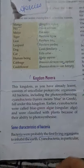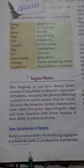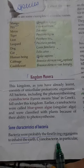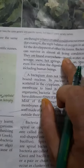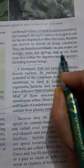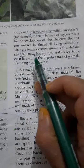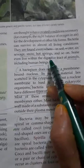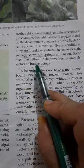What are the characteristics of bacteria? Bacteria were probably the first living organisms to inhabit the earth. Bacteria can be found everywhere — in the soil, water, air, sea, snow, and hot springs. They are found in the coldest as well as the hottest regions.